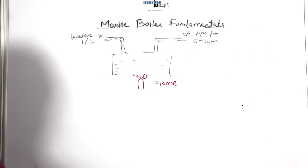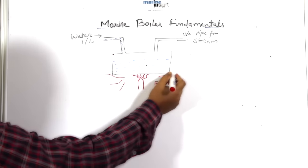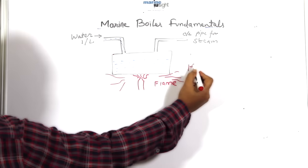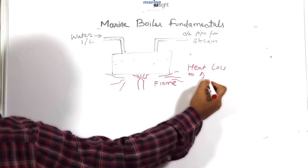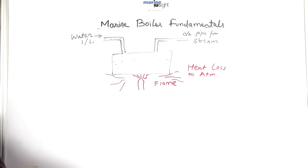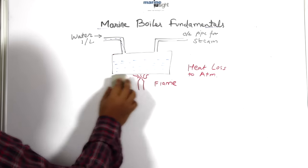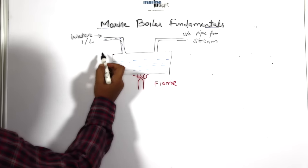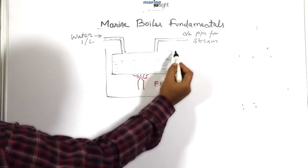Now in this arrangement, even if we have an outlet line to collect the steam, majority of the heat is lost to the atmosphere whereas a part of it is transferred to the container through flames. To prevent this heat loss, we will put a frame around the arrangement.